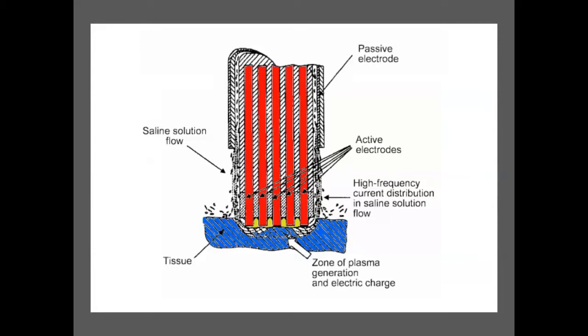Breaking down the wand: these are the active electrodes, and saline comes in here. When the saline reaches this part, the radio frequency energy from the console contacts the electrodes and you start developing the plasma. This diagram tells you that you're using plasma to do your procedure — hence coblation is a non-touch technique.